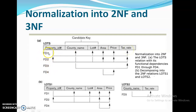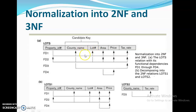In this schema, four functional dependencies exist. FD1 states that property ID identifies all the other attributes — the candidate keys and all non-prime attributes. Since property ID is a unique value, it can uniquely identify each and every tuple. FD1 doesn't have any problem.